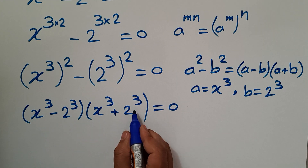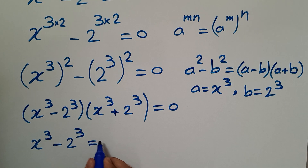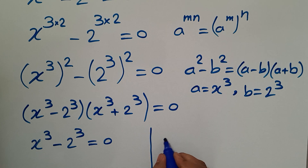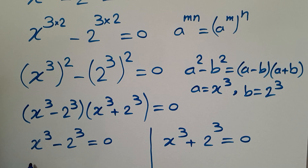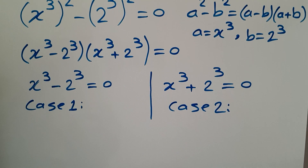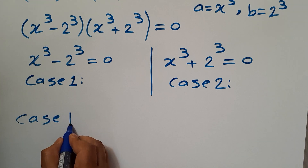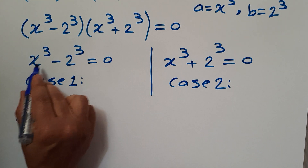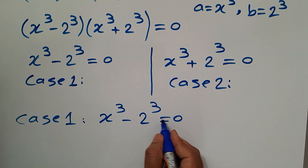Since the product of two terms is equal to 0, either the first term is equal to 0 or the second term. So x cubed minus 2 cubed equals 0, or x cubed plus 2 cubed equals 0. We have these two cases. Let's focus on case number one: x cubed minus 2 cubed equals 0. We have a difference of two cubes form.